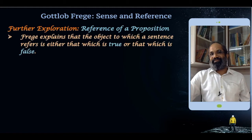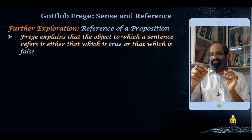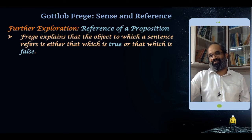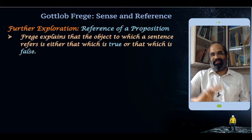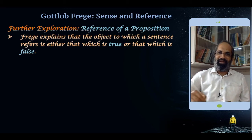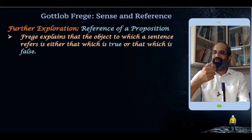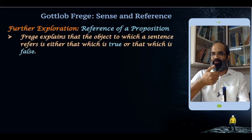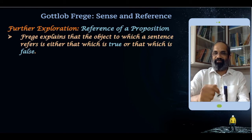We know that the reference of a sign is its object. The term 'morning star' refers to Venus, the object, and the term 'pen' refers to this object. So the reference of a sign — a word, a group of words, or a phrase that becomes a sign — its reference is the object.